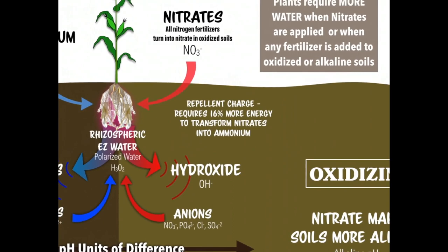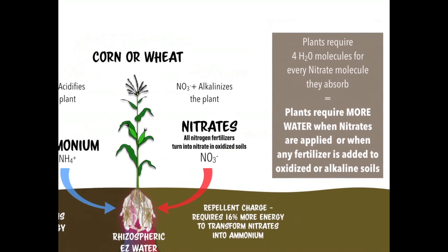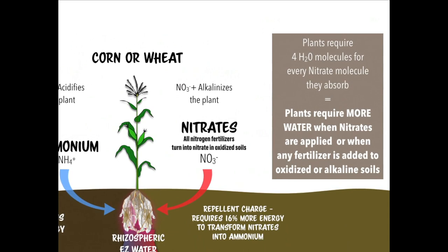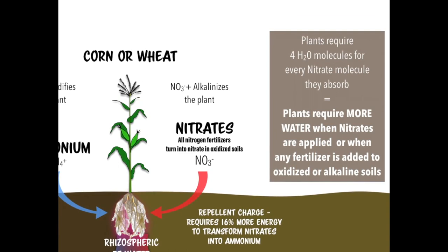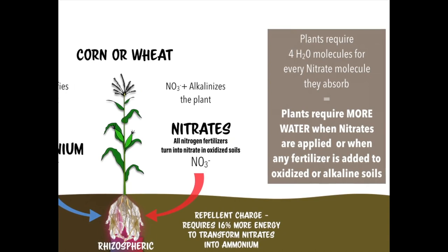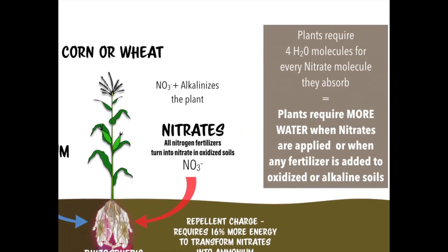Nitrates make the soils and plant more alkaline, potentially reinforcing a bad situation. Plants require four times as much water to process nitrates. If you put nitrogen-rich compounds onto oxidized, alkaline soil, it will transform within hours — even ammonium into nitrate. Then your plants are dealing with nitrate, and nitrates are bad.